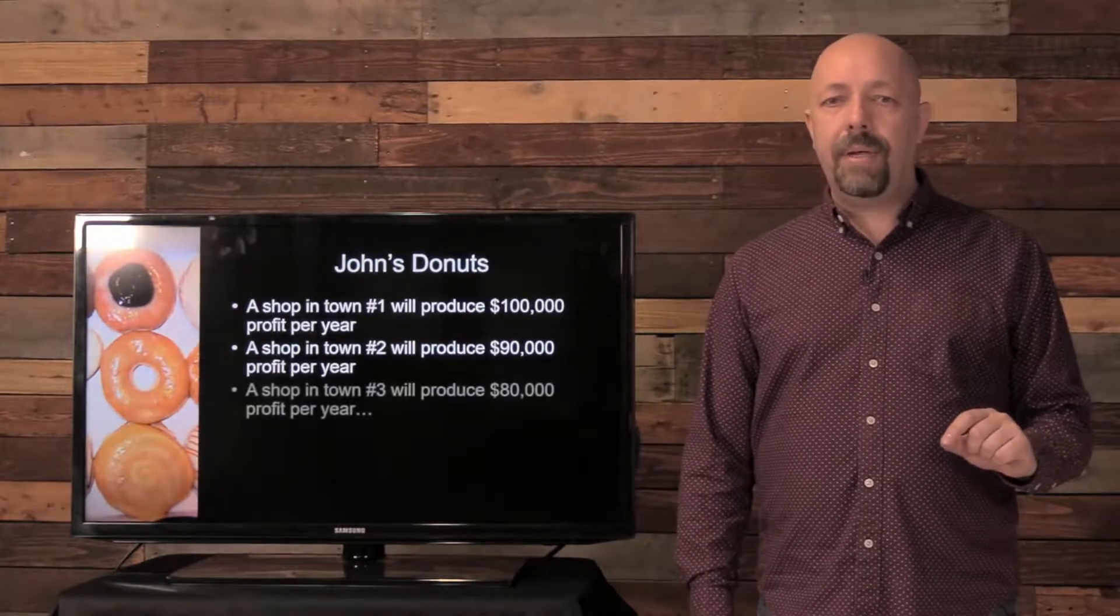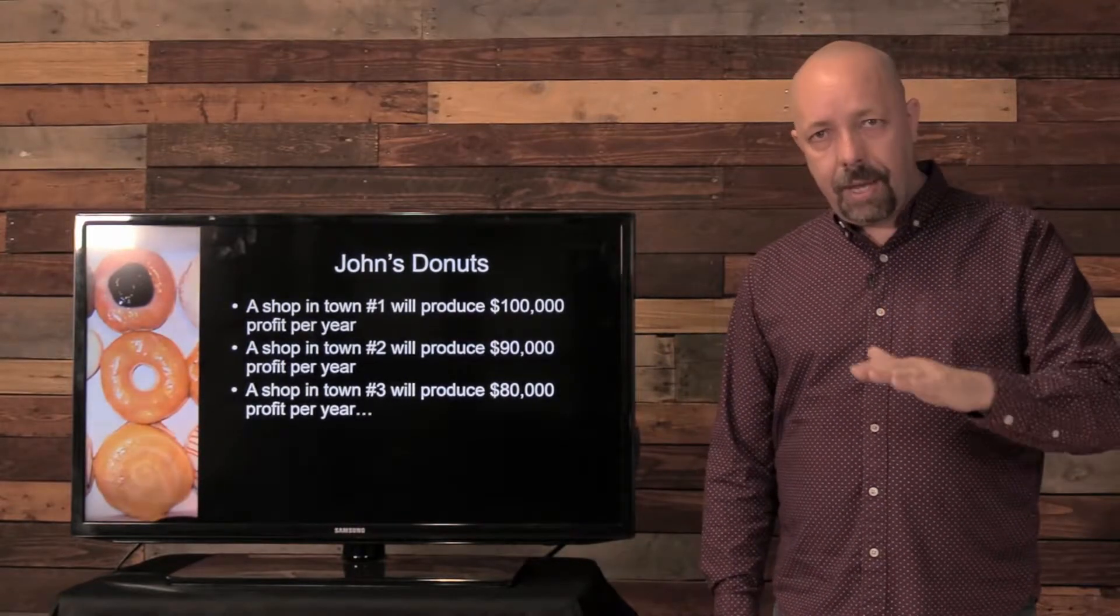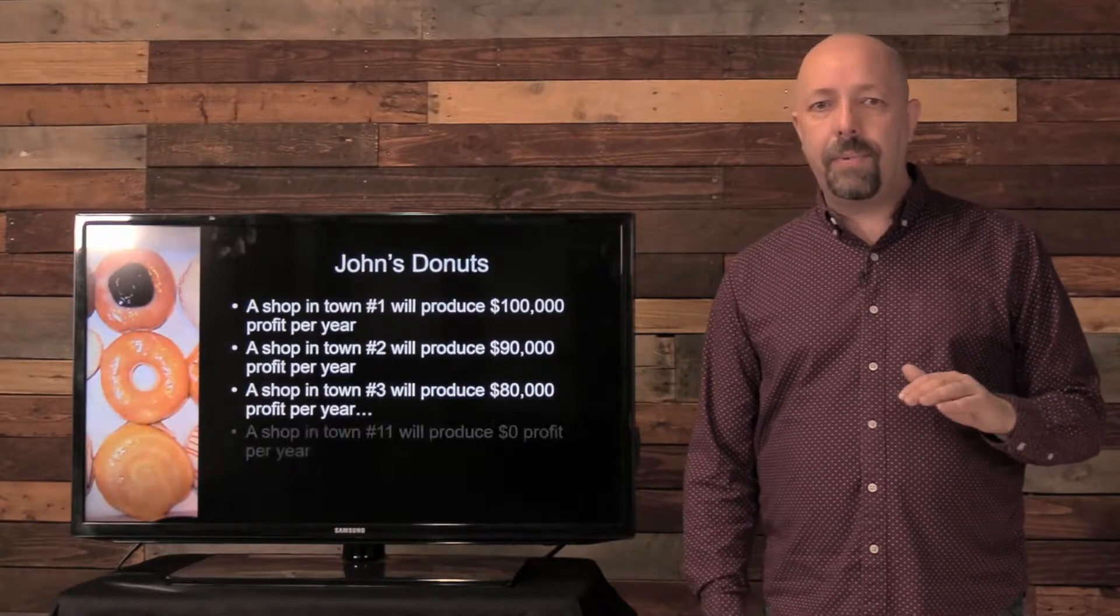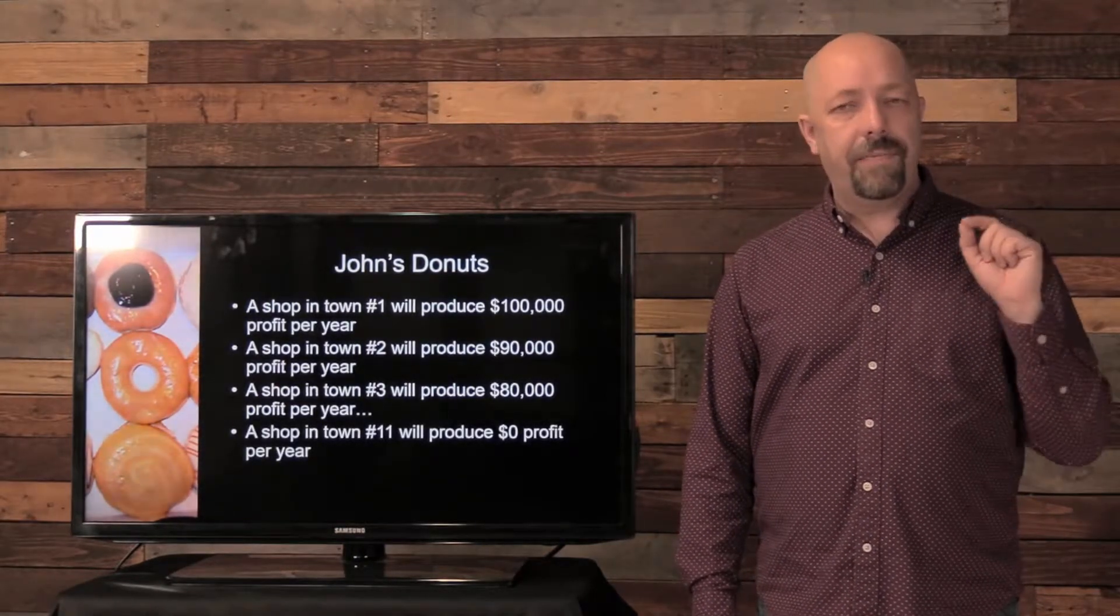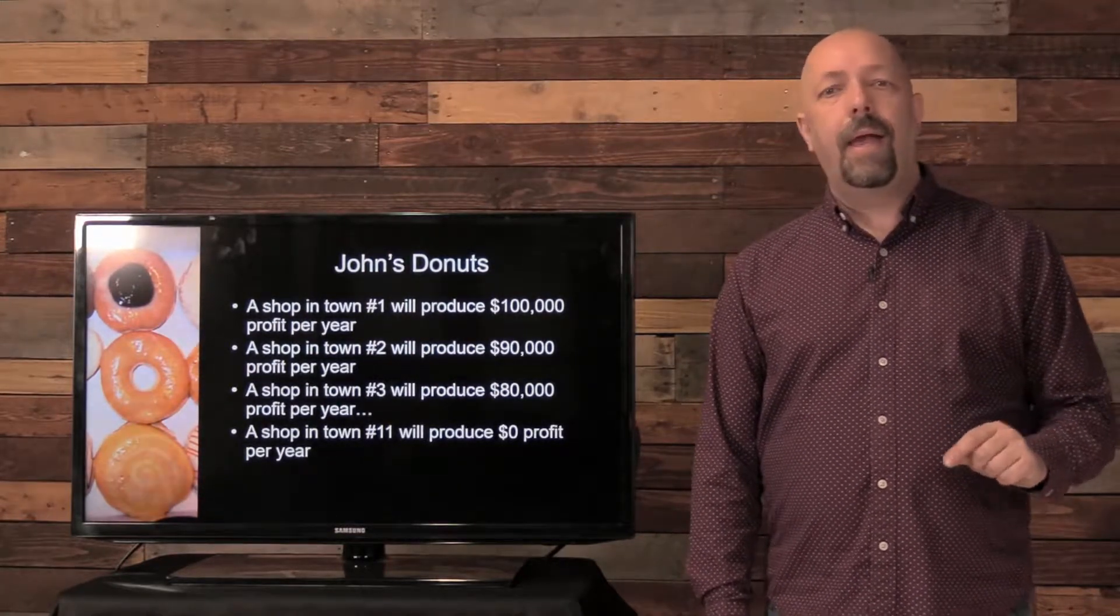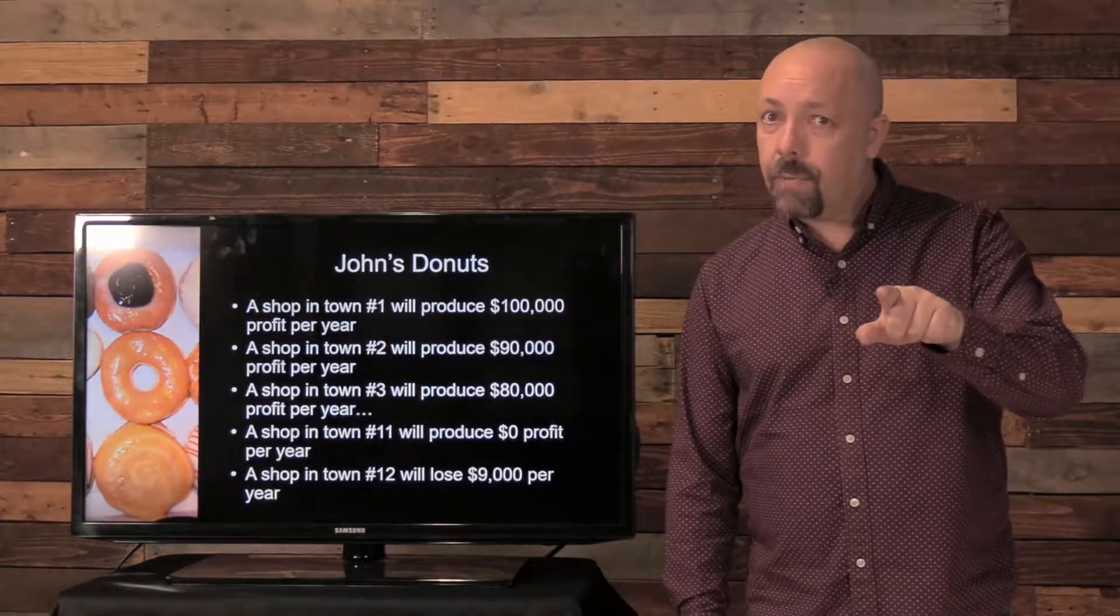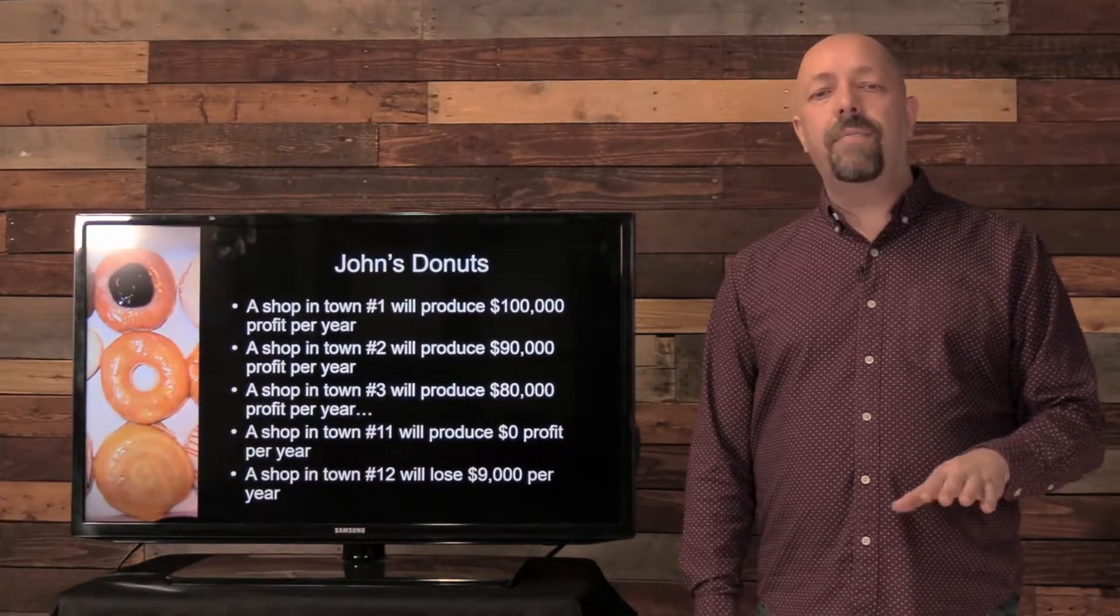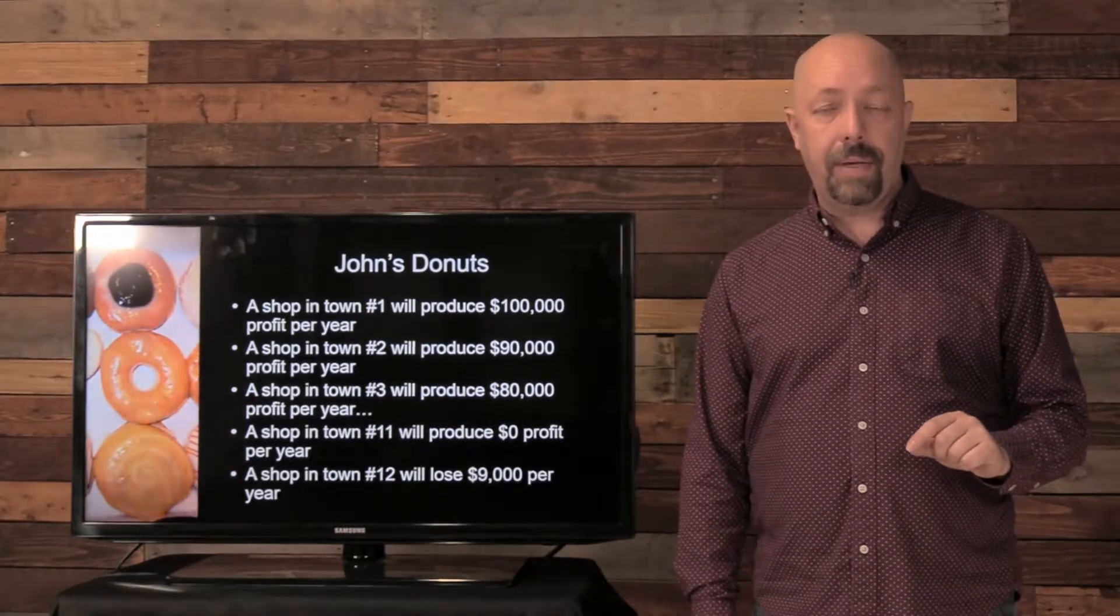Town number three, $80,000 every year. And step down through town four, five, six, step down $10,000 until we get down to town eleven, $0 in profit. It's a very small town. That store is only just going to break even. And then lastly town twelve, which is just as important as town one to me. I want all twelve. But shop in town twelve is going to lose $9,000 a year every year. It's never going to even break even.